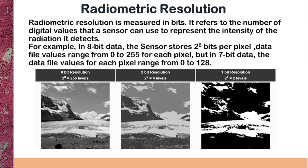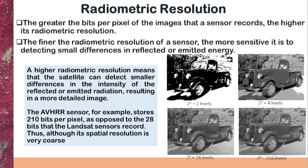It refers to the number of values a sensor can use to represent the intensity of detected radiations. For example, if a sensor stores 8 bits per pixel, it can represent radiation intensity from 0 to 255 for each pixel. If a satellite captures 7-bit radiometric resolution data, it represents intensity ranging from 0 to 128. These images show 8-bit resolution (256 levels), 2-bit resolution (4 levels), and 1-bit resolution (2 levels).